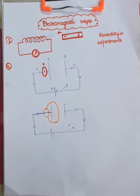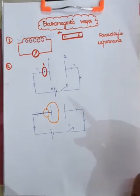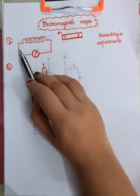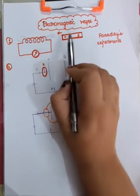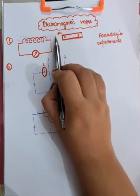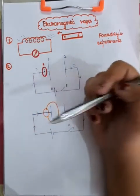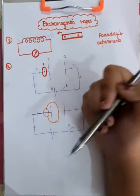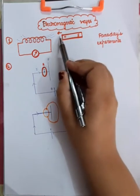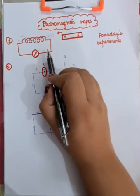We know that a changing magnetic flux produces an electric field. As an example, here is a magnet and a coil connected to a galvanometer. When you bring the magnet closer, you are changing the magnetic flux, and ultimately current will start flowing — EMF will be induced. So what do we get from this? That when we change the magnetic flux, we are creating an electric field because EMF is getting induced.